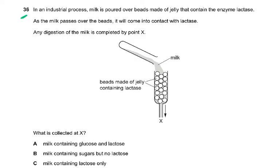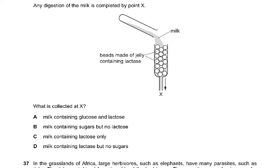Question number 36: in an industrial process, milk is poured over beads made of jelly containing the enzyme lactase. As the milk passes over the beads it contacts the lactase, and by point X all digestion of lactose is completed. What is collected at X? It is milk that contains sugars but no lactose. People with lactose intolerance cannot digest lactose, so we remove it using immobilized enzymes. The lactase converts lactose into glucose and galactose, so the milk contains sugars but not the disaccharide lactose.